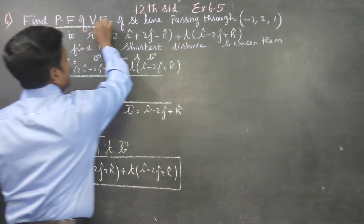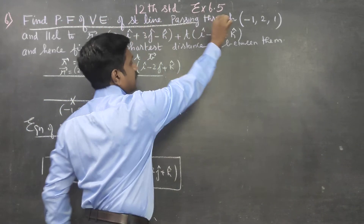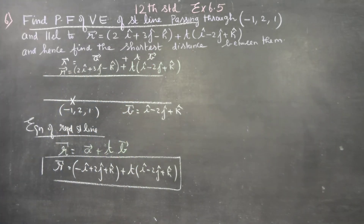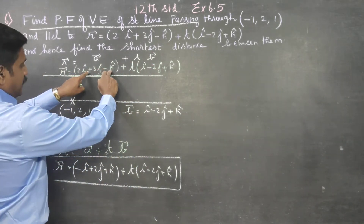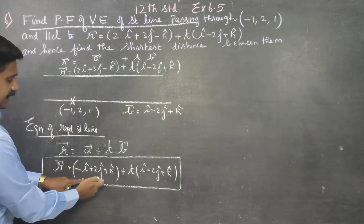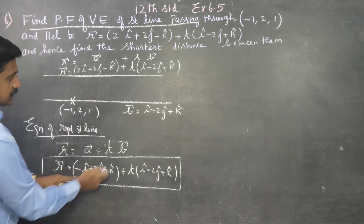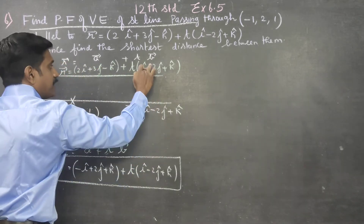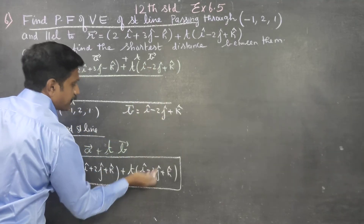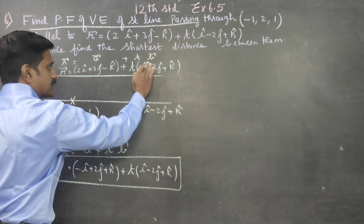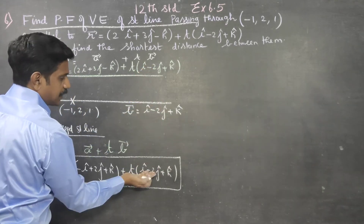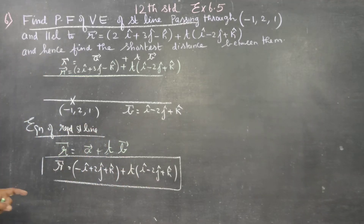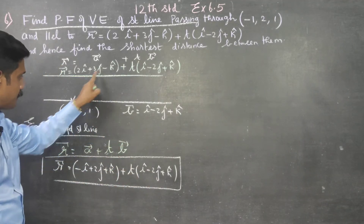This is the parametric equation of the straight line. Since the green line and white line are parallel, the answer uses the same direction vector. Parallel lines have the same vector or a scalar multiple of it. This is the final answer.